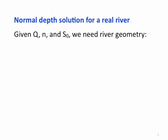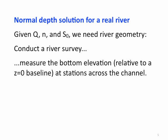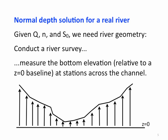So in dealing with the real river, we're going to be given Q, N, and S0, but we're going to need some relation to the river geometry. So we've got to go conduct a river survey. Typically, what we're going to have is to measure the bottom elevation relative to some Z equals zero baseline at various stations across the channel.